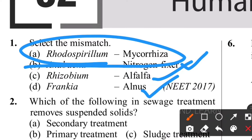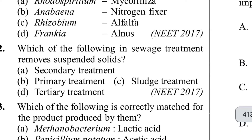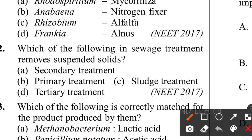Second question: which of the following in sewage treatment removes suspended solids? The removal of small and large floating and suspended solids from sewage occurs through two processes: filtration and sedimentation. These two are involved in primary treatment, which is also called physical treatment. So option B is the correct answer - primary or physical treatment.